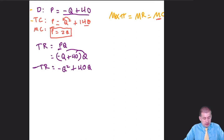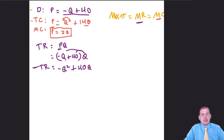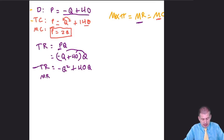What we care about most is marginal revenue, because that's where we need to see where it crosses with marginal cost. To figure out marginal revenue, we take the derivative of total revenue: bringing the two down gives negative 2Q, and the derivative of 40Q gives plus 40. So our marginal revenue formula is P equals negative 2Q plus 40.